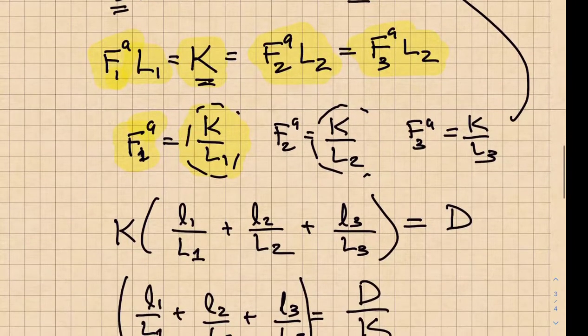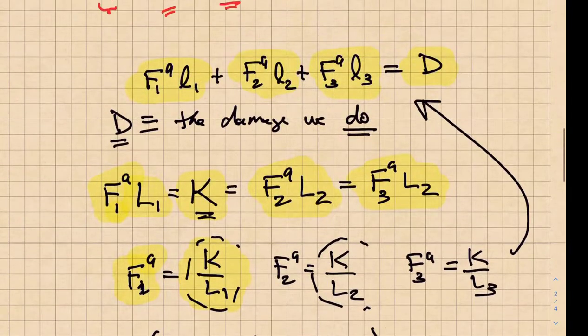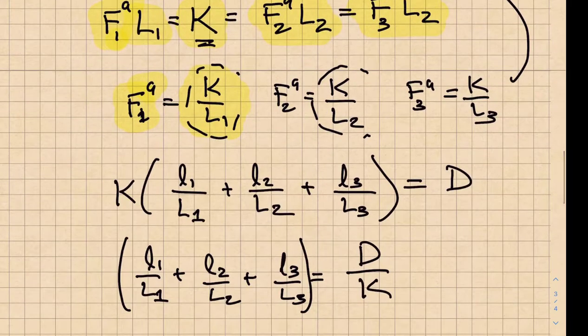When we replace those things and we put them back up into this damage equation, we find that we have K out front and the ratios of the fraction of lifetime, L1 over capital L1, L2 over capital L2, likewise for L3. And all of that then can give us a fraction of life term. This is our fraction of life.